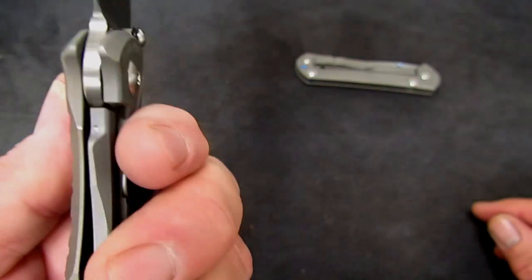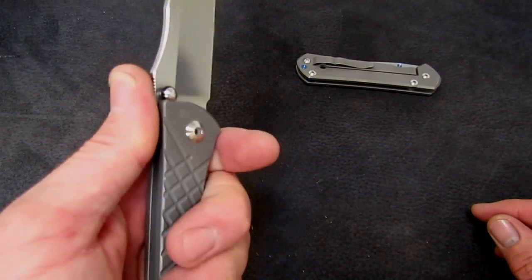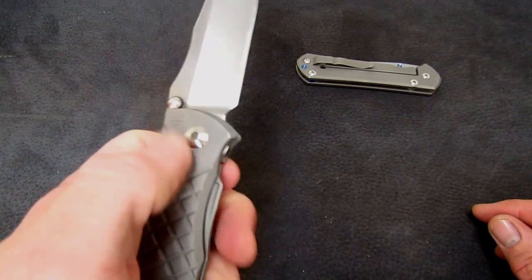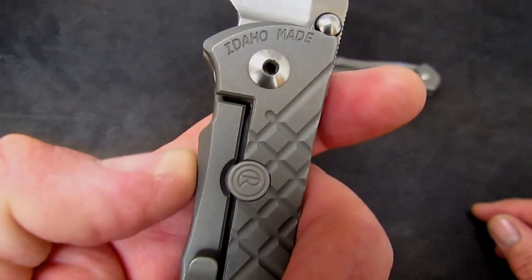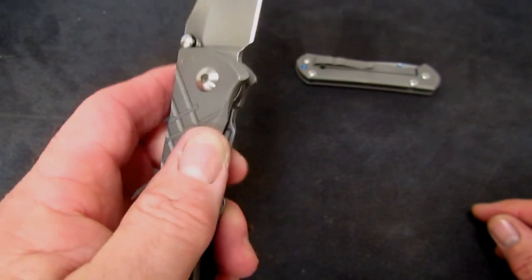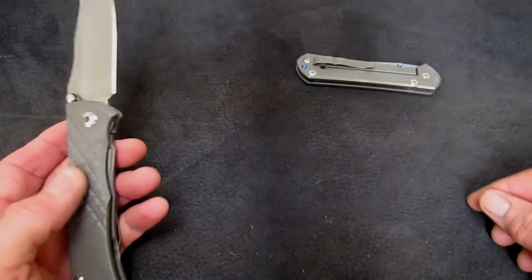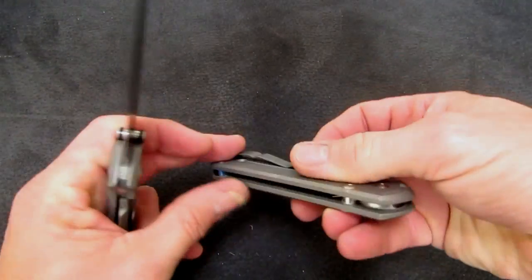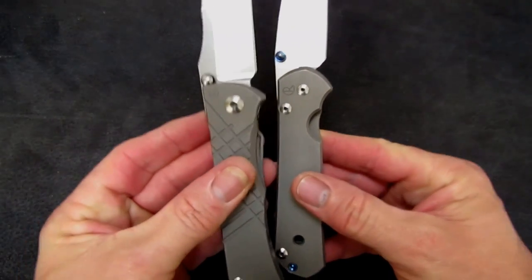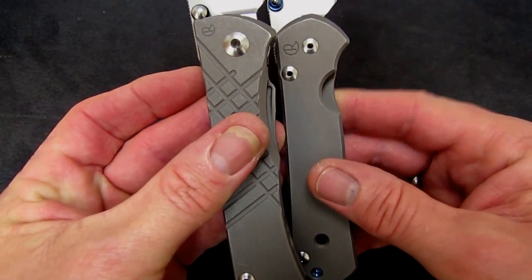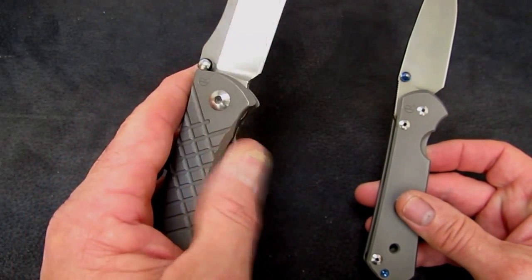It forms a super finger choil, very confining, very precise, and then this tab on the lock bar not only forms the back of the choil but it also is sort of the tab for releasing the knife. Now remember, I don't have this big cutout that I have on the Sebenza. See, I'm getting this big round area to push on with the Sebenza. I'm getting this tab sticking up on the Umnumzaan, and it requires something a little different.